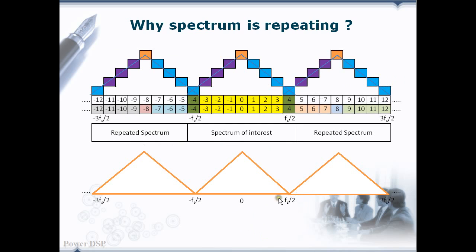Here, this is our spectrum of interest and these are the repeated spectra. In fact, it is extended to plus infinity on this side and minus infinity on this side. The ranges Fs/2 to 3Fs/2 and minus Fs/2 to minus 3Fs/2 are the repeated spectra shown in this diagram.